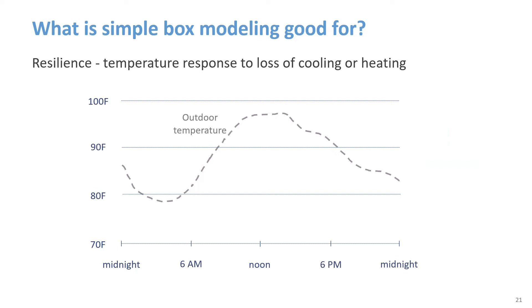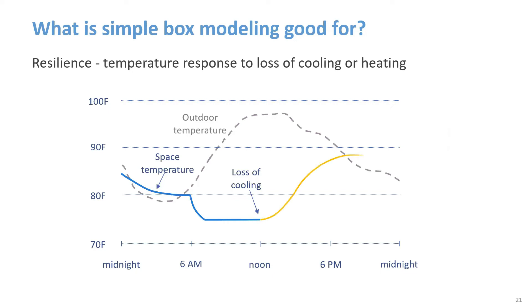Resilience is becoming a more important issue for building designers. Energy modeling programs can provide a rough estimate of space temperature and how it might change when there's a loss of cooling, which might be due to a power outage or system failure. This illustration shows one hot day under normal operation, and if cooling is lost at noon, the space temperature will rise at different rates depending on whether the space has low or high thermal mass. The simulation can estimate how long the space temperature will remain comfortable in both cases.